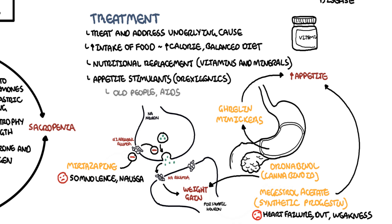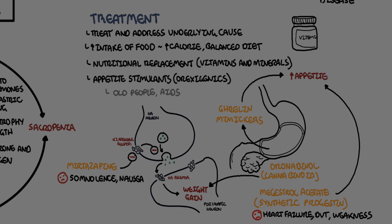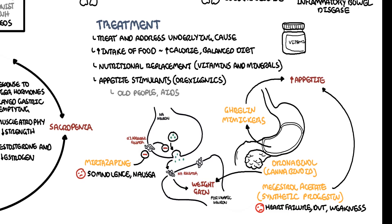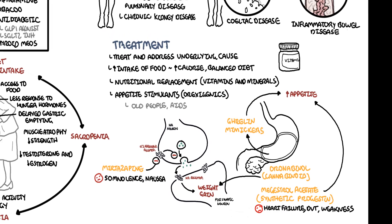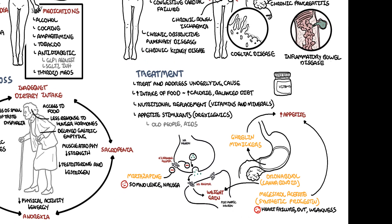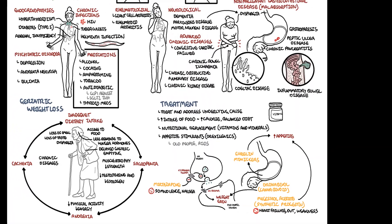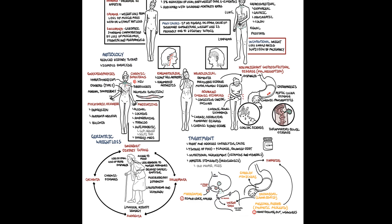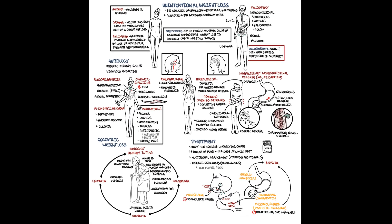In summary, we talked about weight loss and its different causes — namely malignancy and non-malignant causes, of which there are many. We also discussed weight loss in the geriatric population, which has a multifactorial cause including sarcopenia, anorexia, cachexia, and reduced oral intake. Finally, we covered treatment options, namely increasing calorie intake and pharmacological interventions.